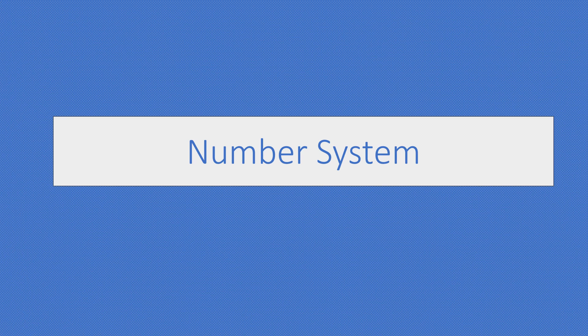Students, let's continue with number systems. In previous videos we discussed what a number system is and its types. There are four types: binary, decimal, octal, and hexadecimal number system. Out of these four types we have discussed the first three, and only one type is left — hexadecimal number system.